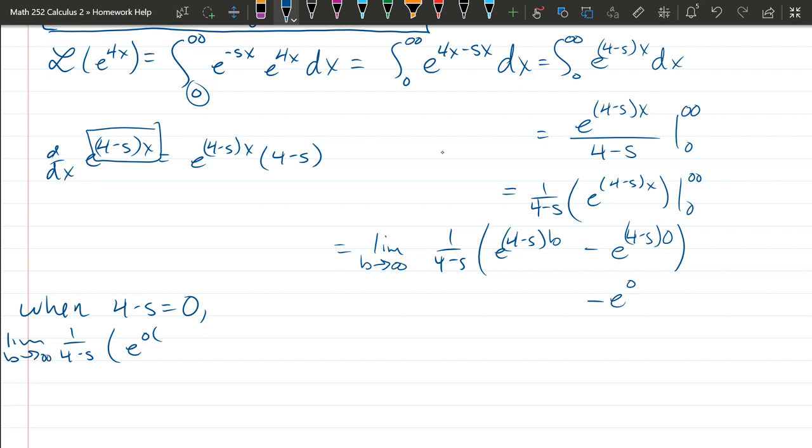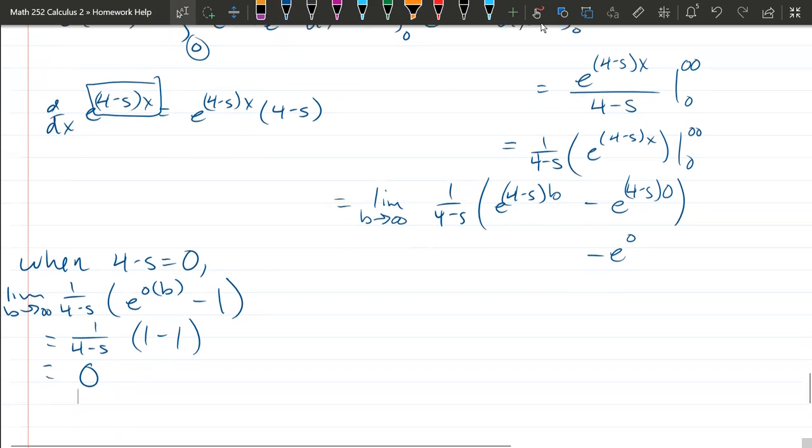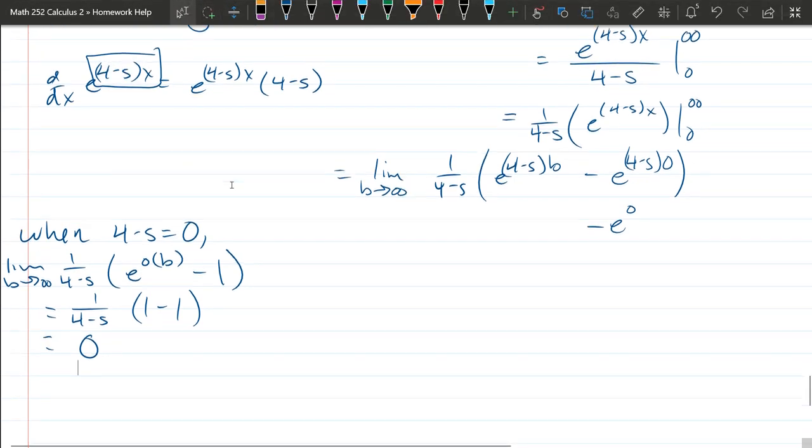Okay, limit B approaches infinity, e to the 0 times B minus e to the 0 which is 1. E to the 0 is 1, so we have 1 minus 1, and that equals 0. So when 4 minus s equals 0, we get 0.